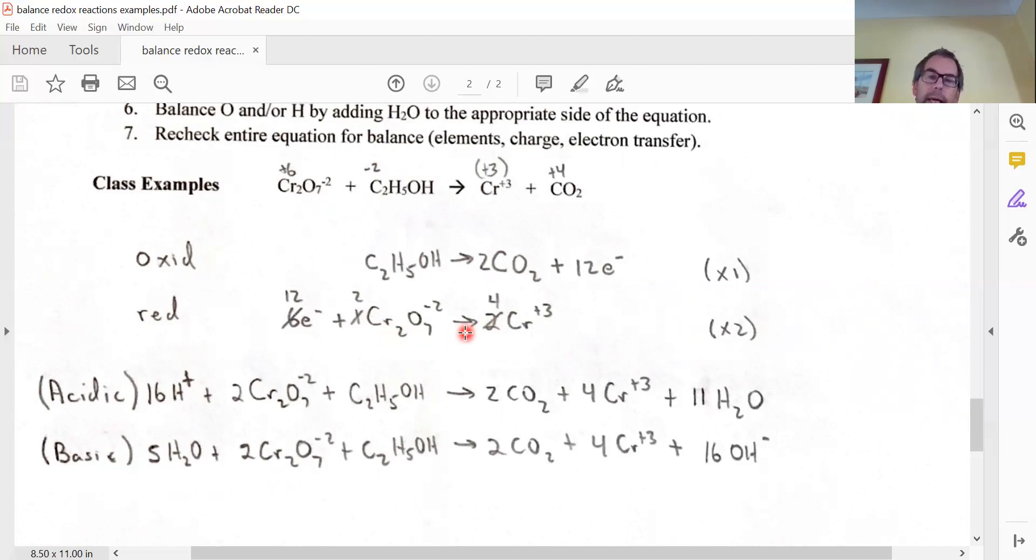Well, it's a movement of six electrons. This one has 12 electrons, so I'm going to double this to make sure that the total number of electrons is 12 on each side.